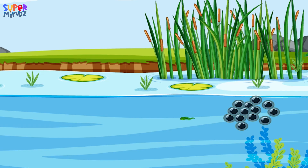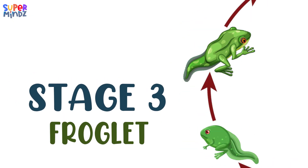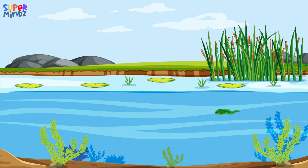Tadpoles look like tiny fish with long tails. They breathe through gills and swim around in the water. Stage three: Froglet. As tadpoles grow, they undergo an amazing transformation.